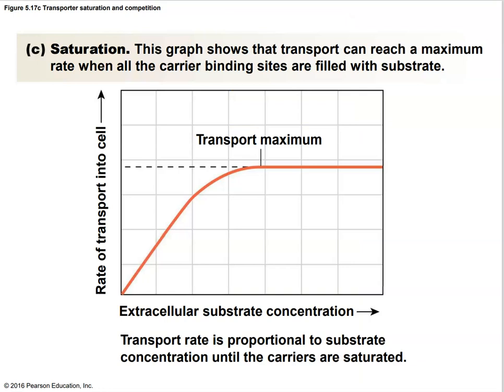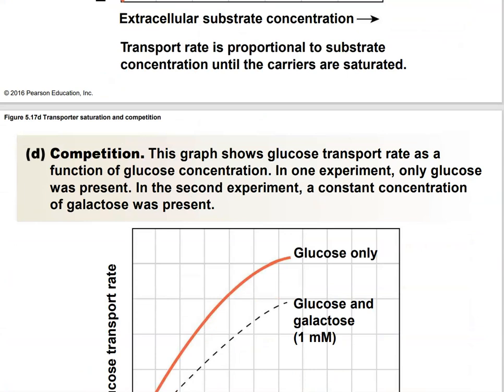A brief word about saturation and competition. Every one of these transport molecules has a transport maximum, which can differ for different transporters, but they all reach a transport maximum. They cannot increase the rate of transport beyond that point. You can increase substrate concentration as much as you want, but the transporter can only do so much — they all reach a transport maximum eventually.